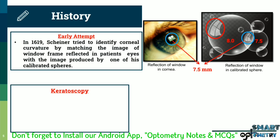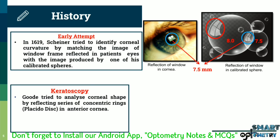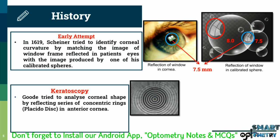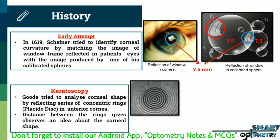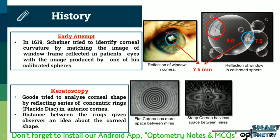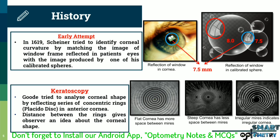In keratoscopy, Gould tried to analyze corneal shape by reflecting a series of concentric rings — the Placido's disc — on the anterior cornea, using concentric rings instead of a window as the object. The image of these rings in the patient's cornea gives an idea about corneal shape: a flat cornea has more space between the mires, a steep cornea has less space, and an irregular cornea such as in keratoconus has irregular mires.